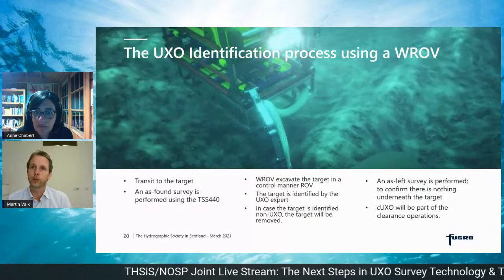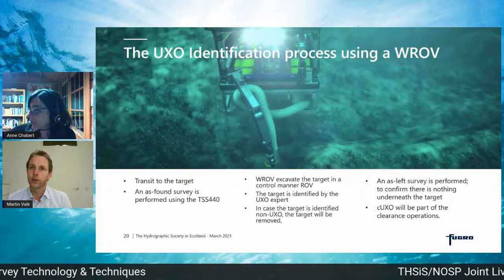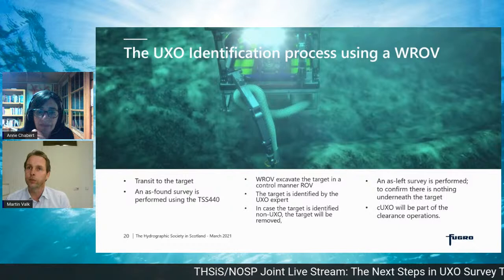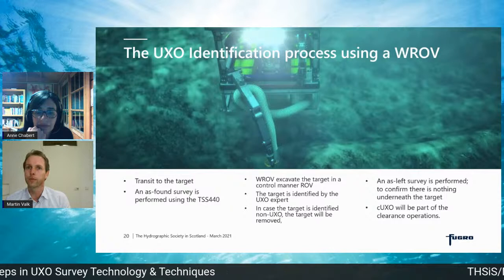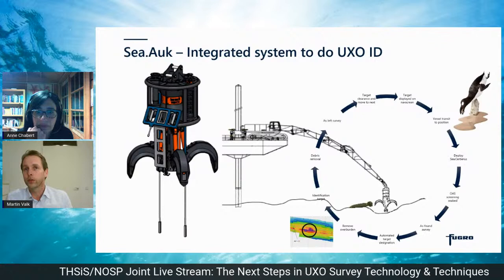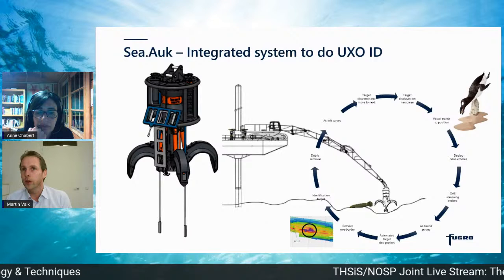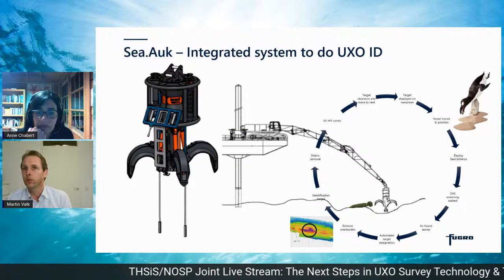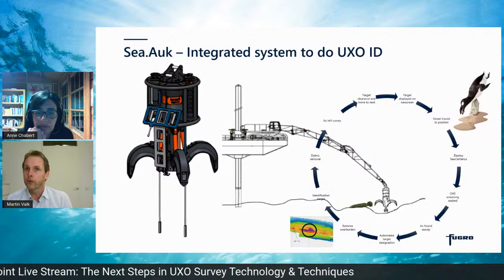For tidal areas characterized by high currents and large depths of burial, Fugro operates an integrated system — the CAUC — from a backhoe excavator. The typical UXO identification process involves the following steps: first, an S-found survey is performed using the TSS 440; next, the work-class ROV gently excavates the target in a controlled manner; the target is identified by a UXO expert; if non-UXO, it is removed; and finally, an S-left survey confirms nothing remains underneath masked by the target. If confirmed as UXO, it proceeds to clearance operations. The CAUC system, operated from a backhoe dredger, smartly integrates all sensors to perform UXO ID without recovery of the tool.